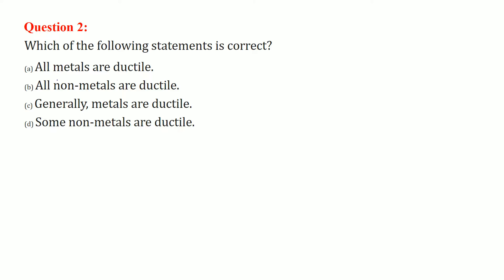Which of the following statement is correct? All metals are ductile, all non-metals are ductile, generally metals are ductile, some non-metals are ductile. The answer is C.